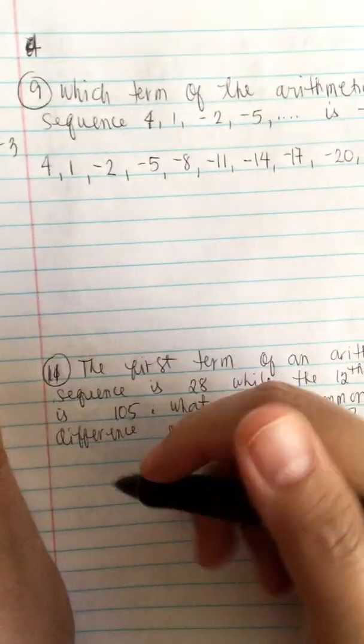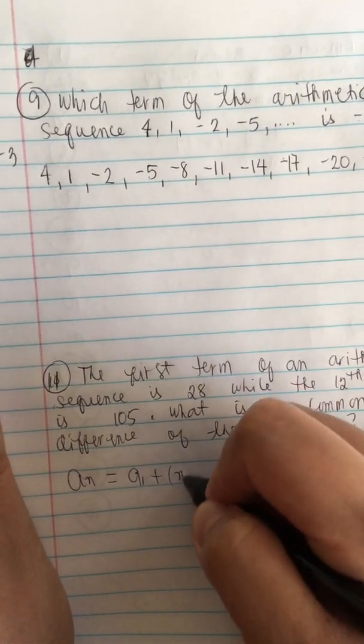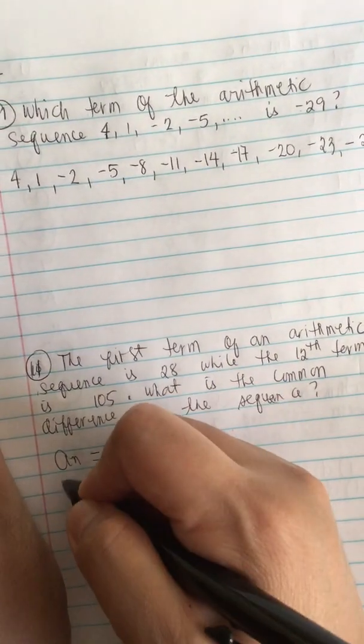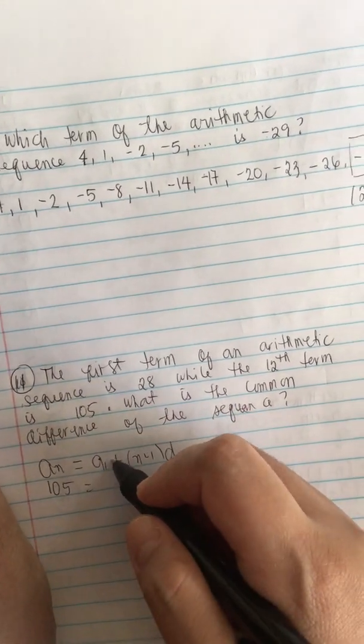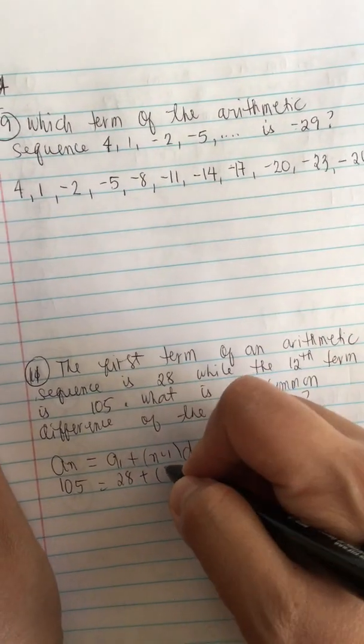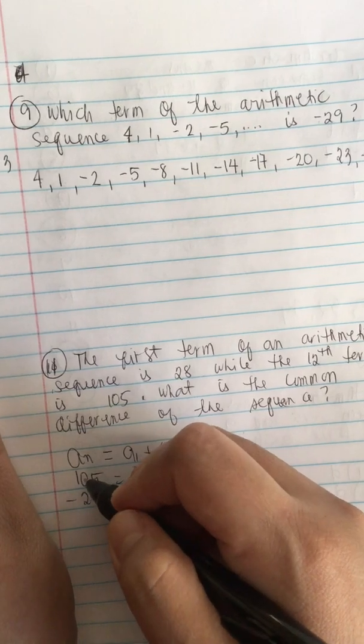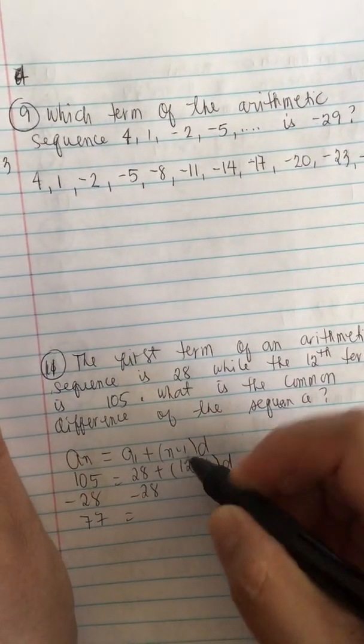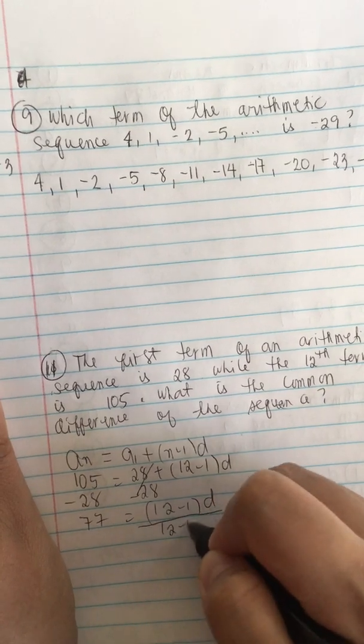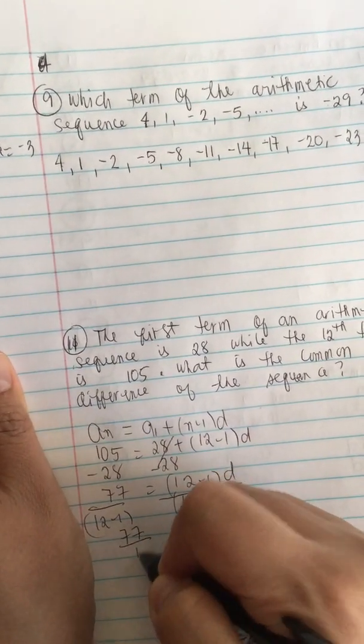So this one, we have to use the formula. So an is equal to 105 is equal to a1 is equal to 28 plus n minus 1. So this is the 12th term. So 12 minus 1 times d. So now we subtract 28. So 105 minus 28 is 77. It's equal to, here it's gone. So we just have 12 minus 1 times d. And if we divide 12 minus 1 to both sides.